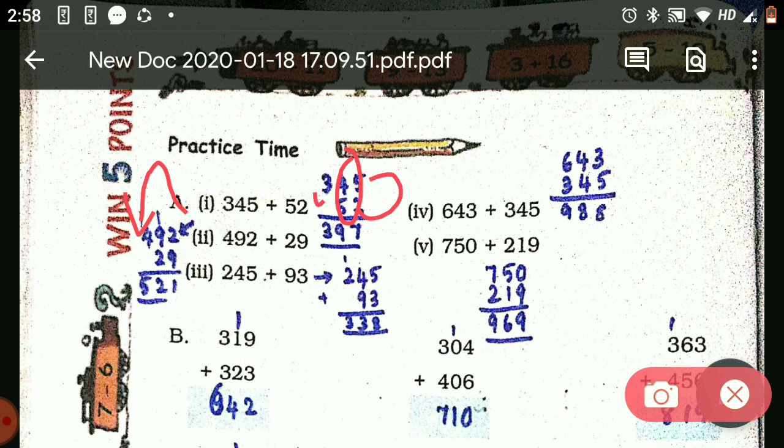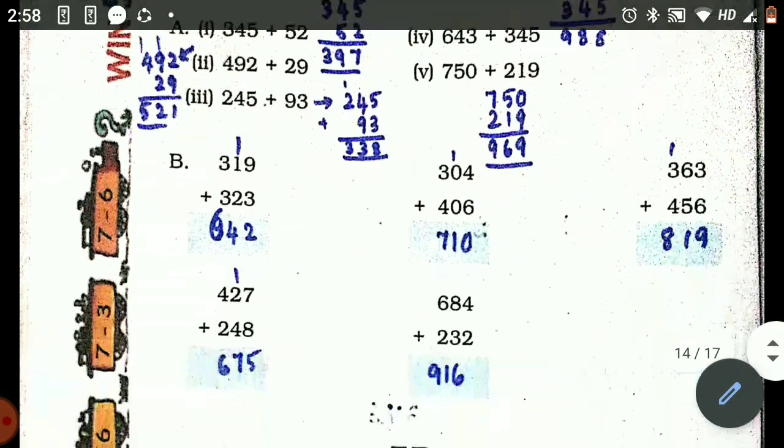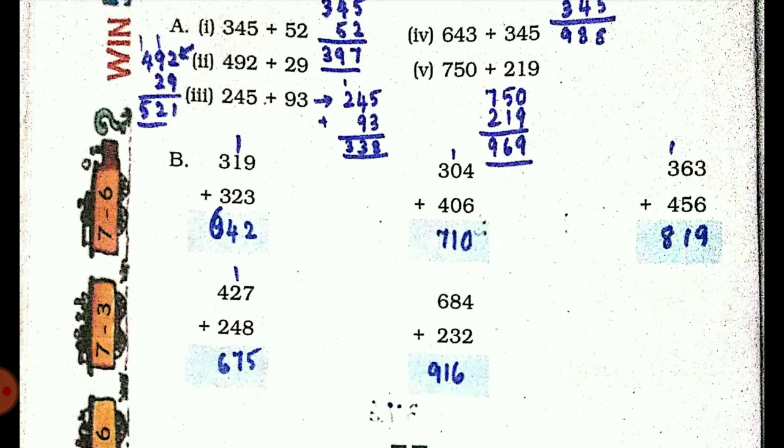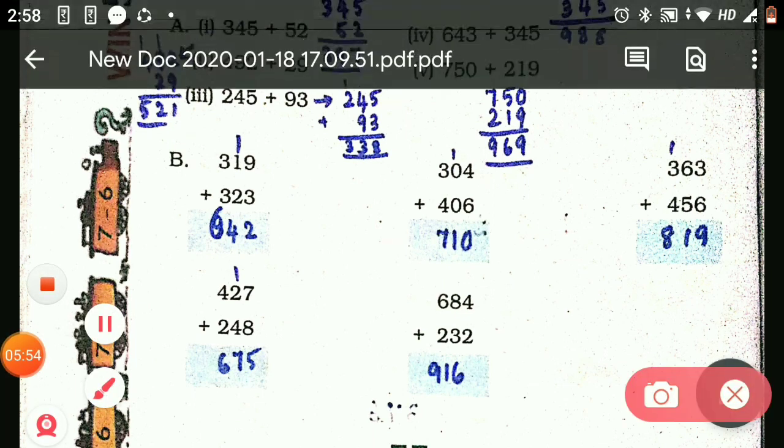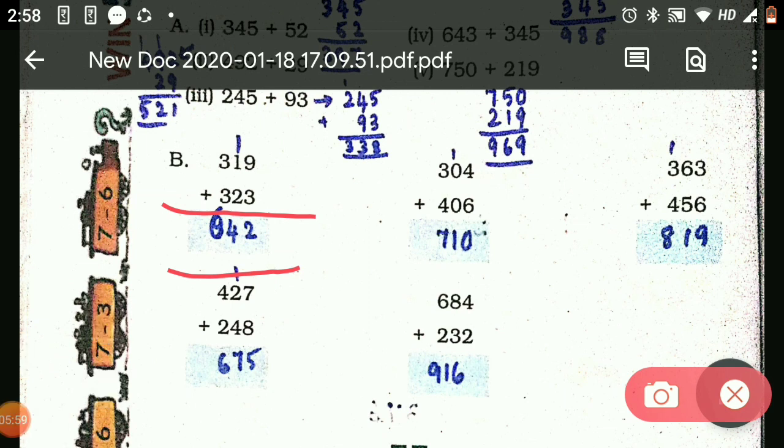Fourth one is 988. Fifth one is 969. Next, for these two you can just solve and check the answers. 9 plus 3 is 12, so 2 here, carry 1 on the top. 1 plus 1 plus 3 is 6. So the second answer is 710. Third one is 819. Fourth one is 675. And fifth one is 916.